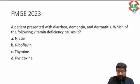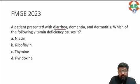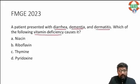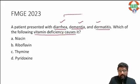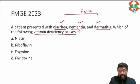This is an FMG-PYQ. A patient presented with diarrhea, dementia and dermatitis. Which of the following vitamin deficiency causes it? We know this is pellagra and pellagra is caused by niacin deficiency.